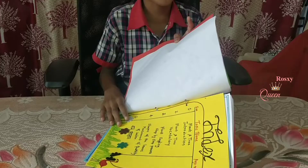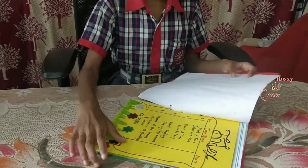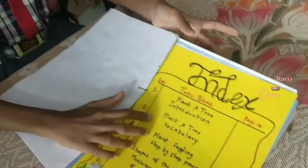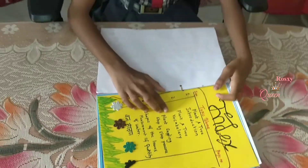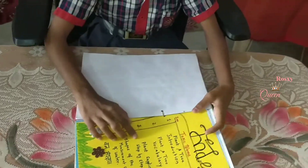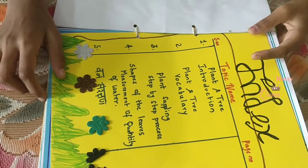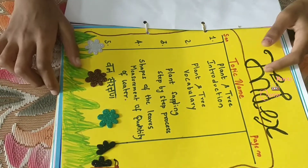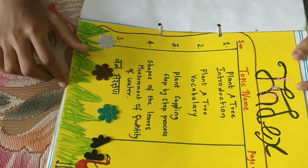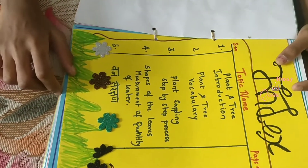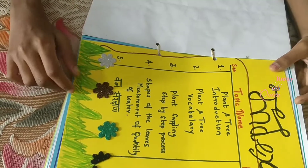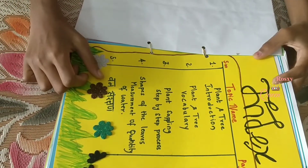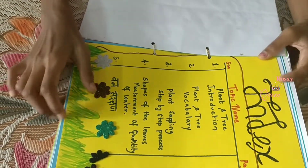And this is my index. Topping in all subjects. Plants and trees introduction, plants and tree vocabulary, plants sapling step by step process, shapes of the leaves, measurement of quantity of water and in India, one sum reaction.